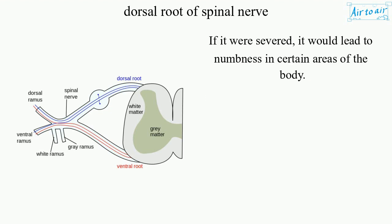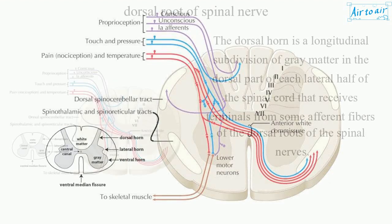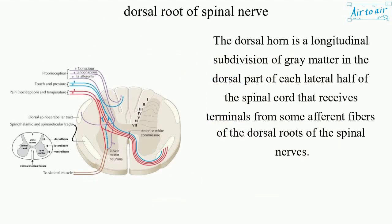If it were severed, it would lead to numbness in certain areas of the body. The dorsal horn is a longitudinal subdivision of gray matter in the dorsal part of each lateral half of the spinal cord that receives terminals from some afferent fibers of the dorsal roots of the spinal nerves.